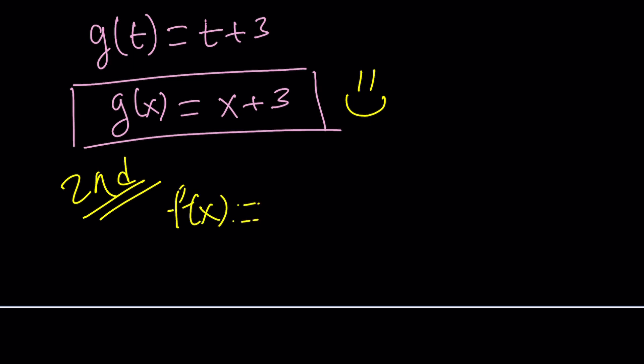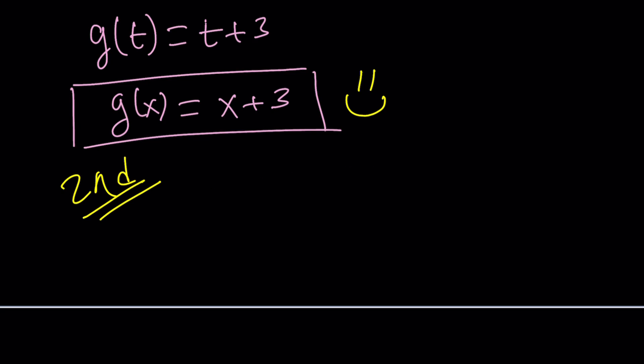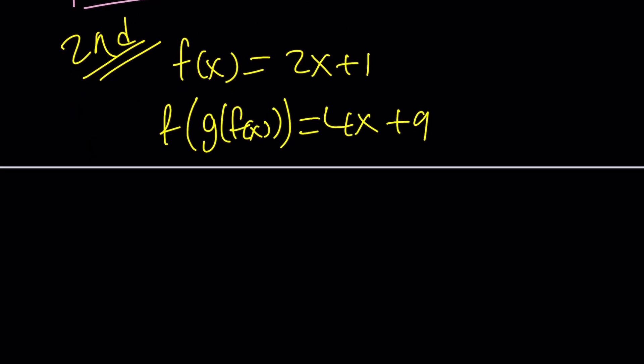So let's go ahead and start with the original problem. F(x) = 2x + 1. And f(g(f(x))) = 4x + 9. And our goal is to solve for g(x).